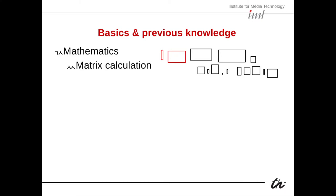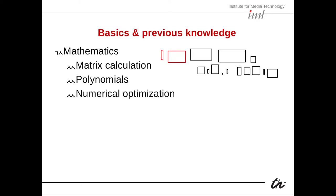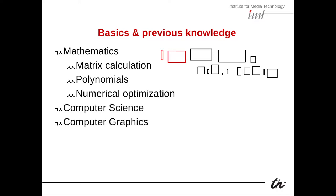For that, you need prerequisites in mathematics. Very important is matrix calculation — matrices, two-dimensional objects — or polynomials, like a times x plus b times x squared. Then we need numerical optimization, which is not taught much in standard mathematics lectures but is one of the basic toolkits of engineering. We also need computer science, computer graphics, signals and system theory (particularly for aliasing and rendering), and video technology for accessing and processing videos from the camera.